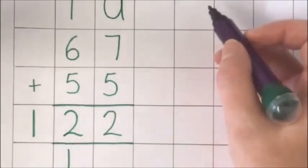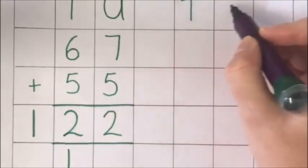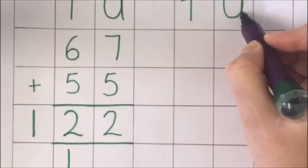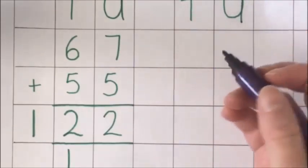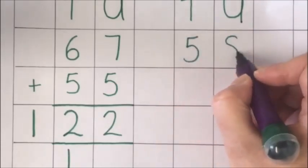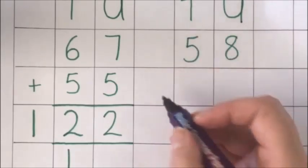I'll do another example. Again I'll put my tens and units column titles. And this time I'm going to do 58 add 43.